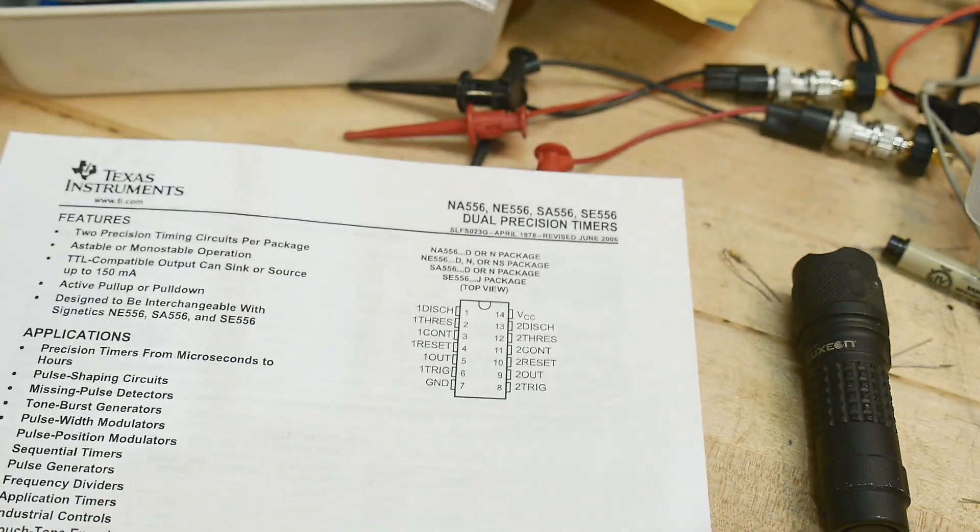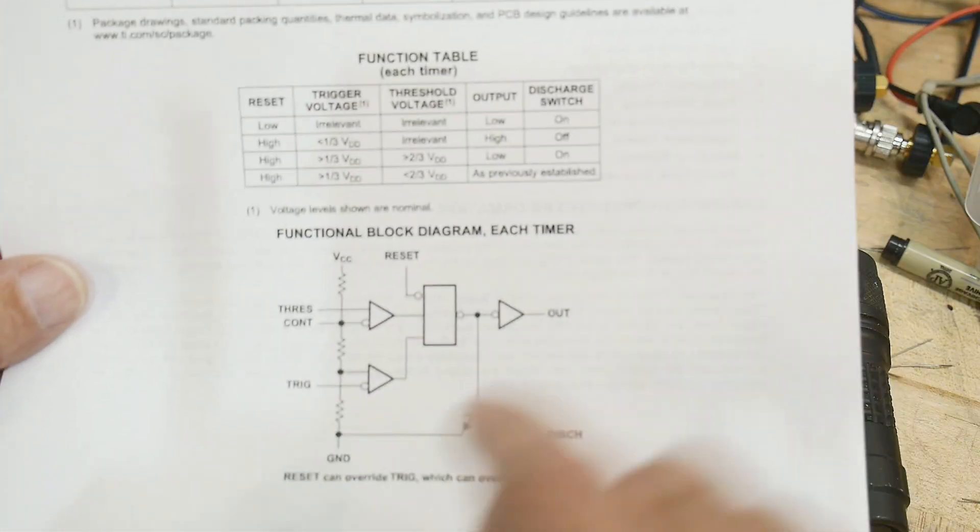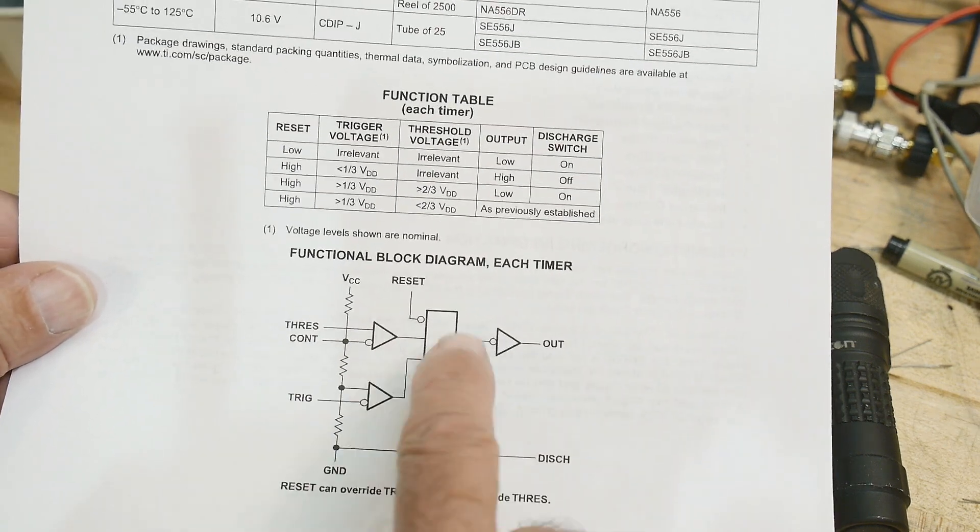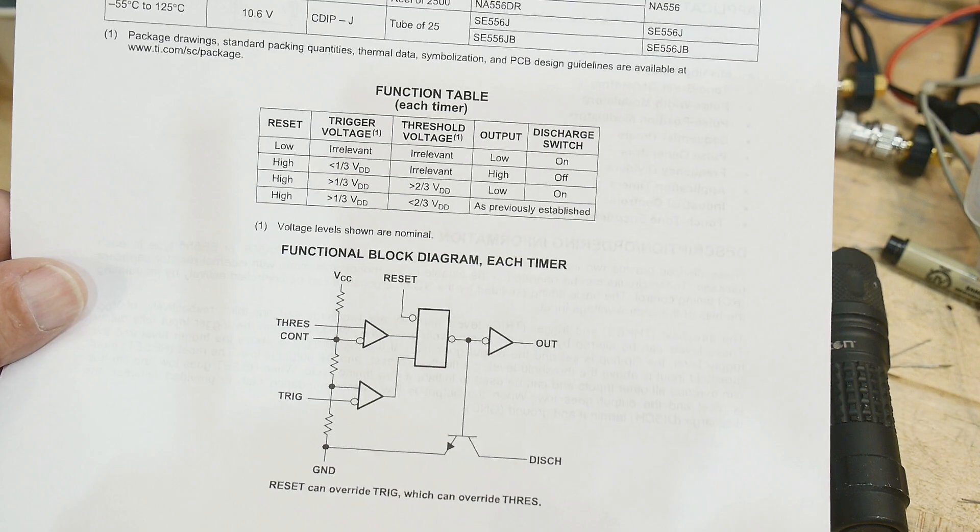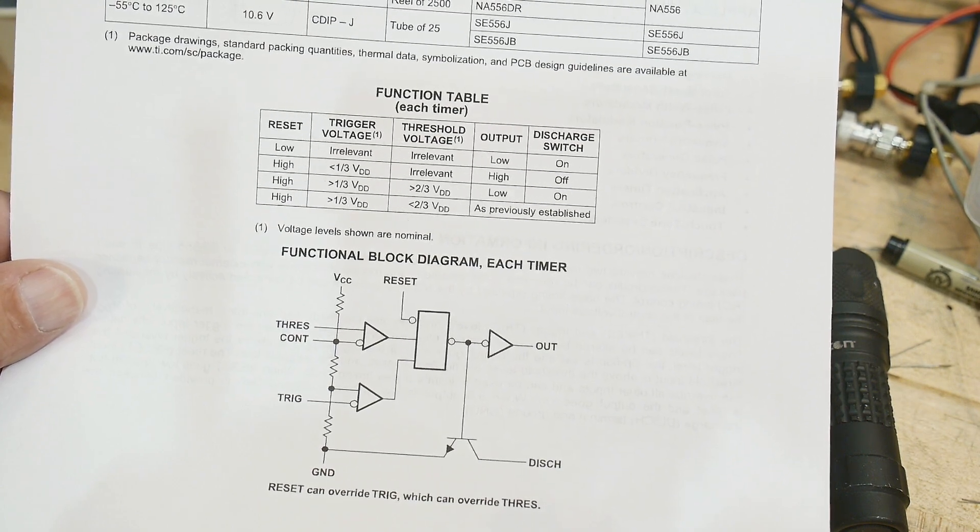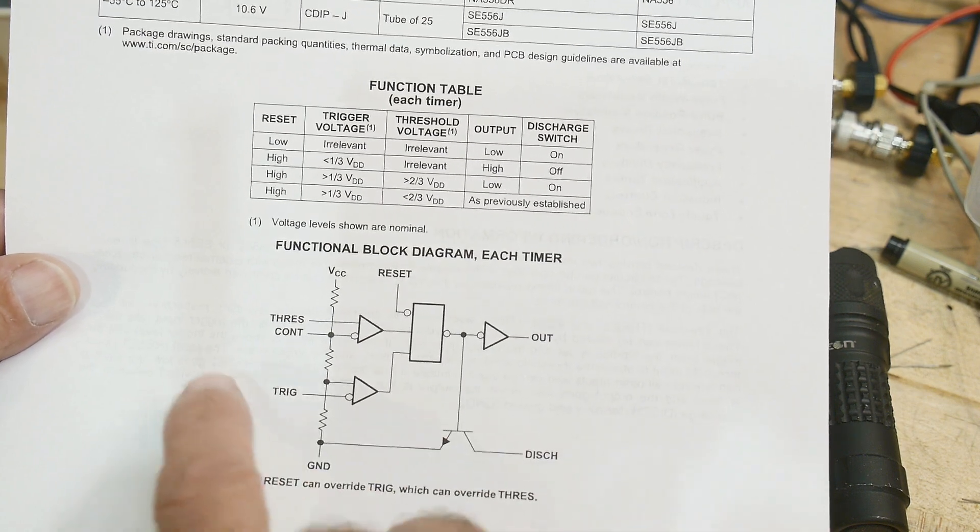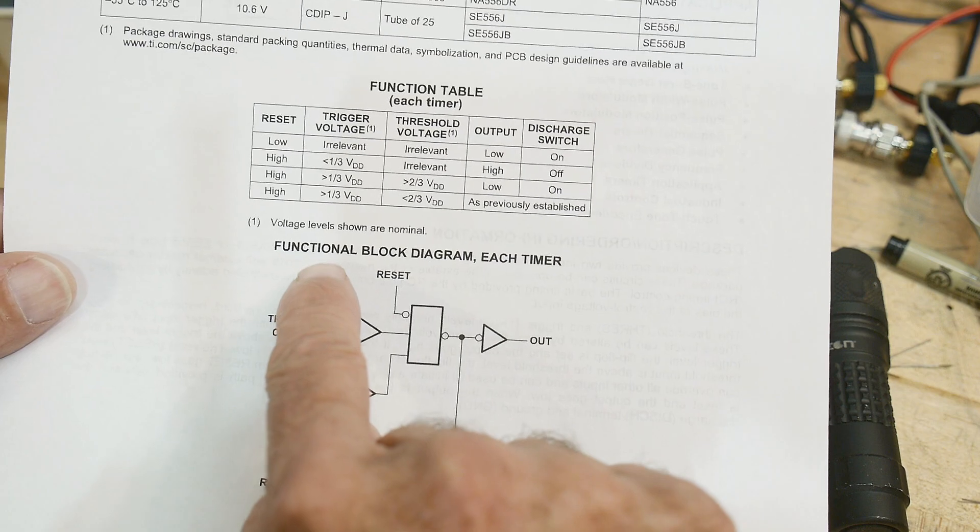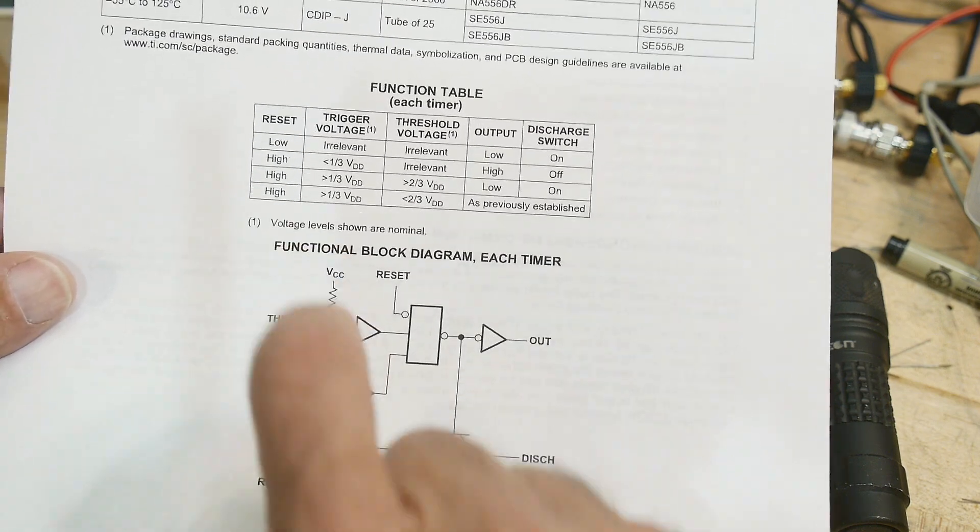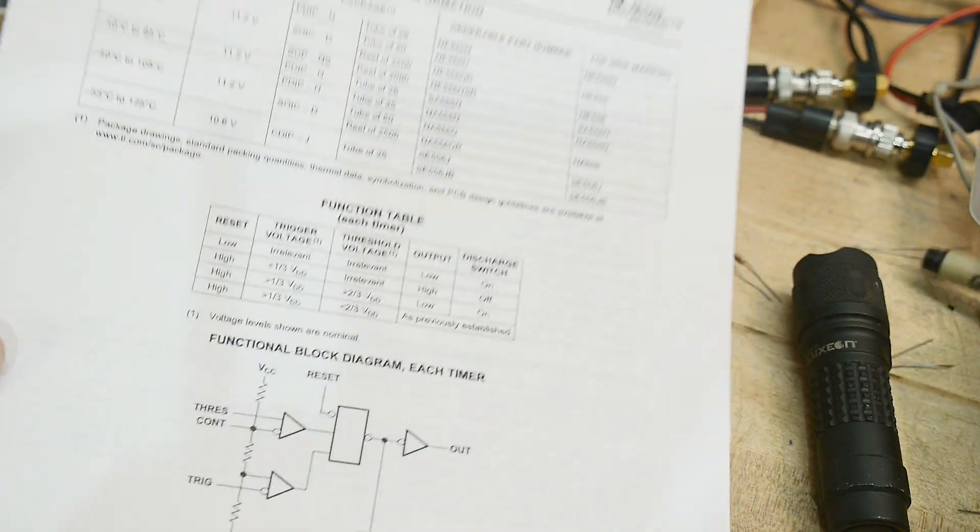So if you weren't familiar with a 555, it's this thing. It has two comparators, a flip-flop, and an output. Usually the way it's used is you put a capacitor and that capacitor gets charged up with some voltage. So usually use VCC and a resistor and you charge up a capacitor.